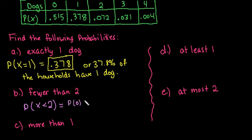We would just take the probability of 0 plus the probability of 1 and add those together. So the probability that there are 0 dogs is 0.515, and then we would add to it the probability of 1 dog, 0.378. If I add those together, I get 0.893. So 89.3% of the households in this particular neighborhood have fewer than 2 dogs.